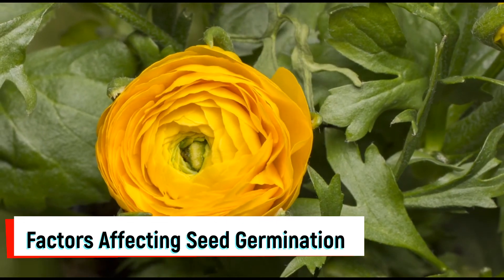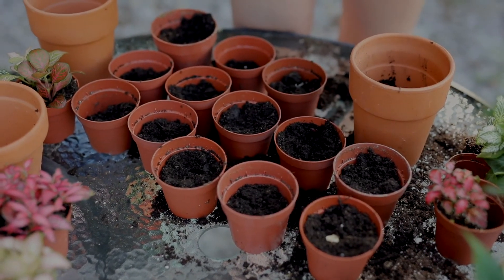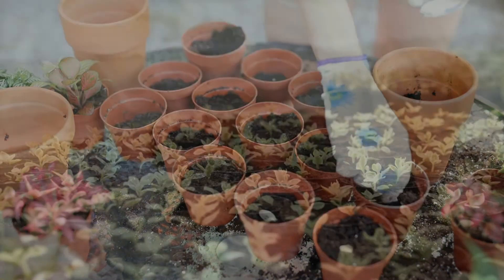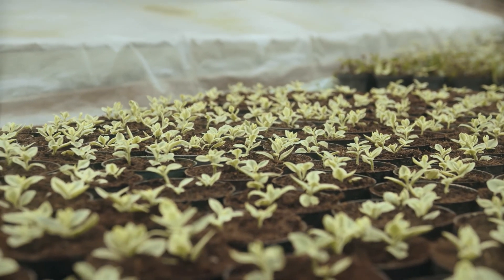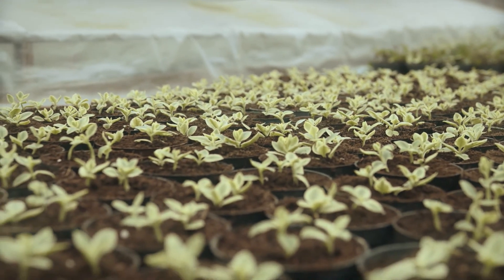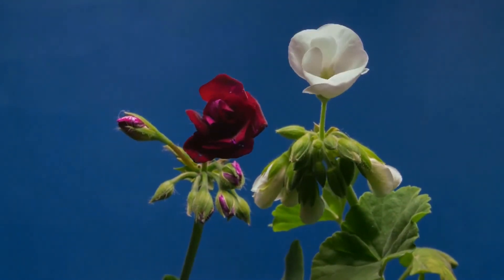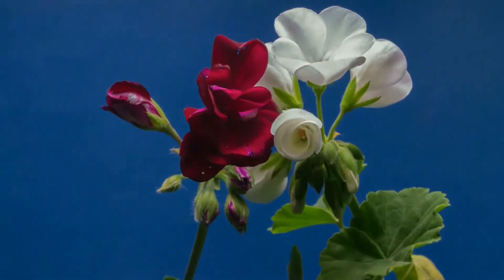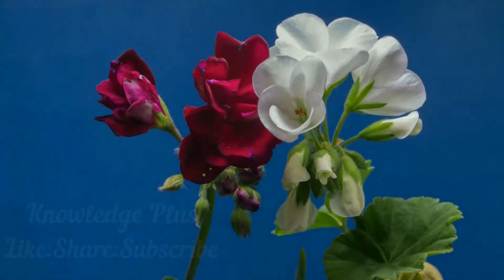Factors affecting seed germination: Germination will not happen if the seed coat is resistant to water and gases, restricts water uptake and oxygen exchange. Seeds with undeveloped or immature embryos do not germinate, and certain seeds contain plant growth regulators which inhibit seed germination. Also, some seeds require more time for their germination.